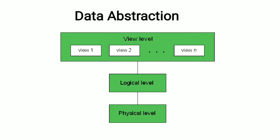To summarize: the physical level is the lowest level, describing how the actual data are stored. The logical level is the next higher level above physical, describing the relationships between data — the entire database in terms of a small number of relatively simple structures. The view level, or user level, is the highest level of abstraction.